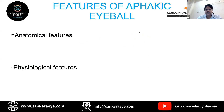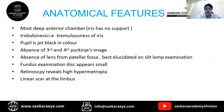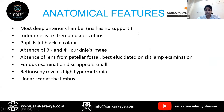Features of the aphakic eyeball can be anatomical or physiological. Anatomical features include a deep anterior chamber, iridodonesis, pupil black in color, absence of the third or fourth Purkinje image, absence of the lens from the back of the lens fossa. On fundus examination the disc appears small. Retinoscopy reveals high hypermetropia and a linear scar will be present at the limbus.